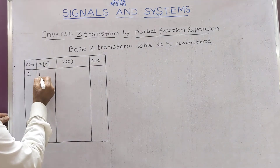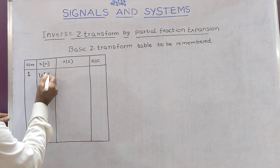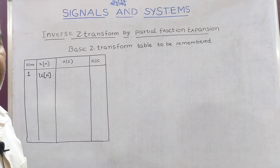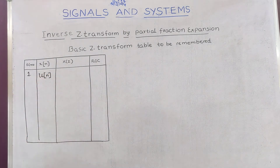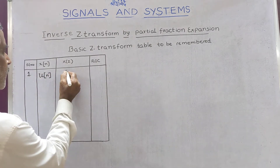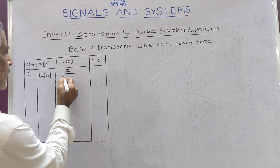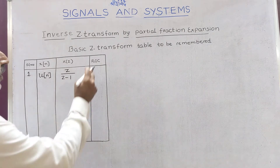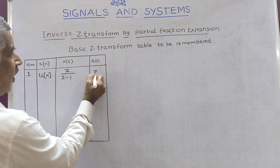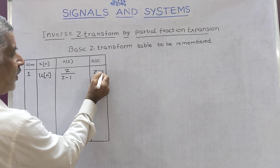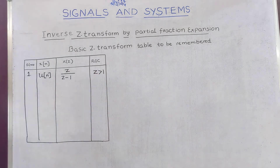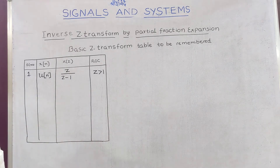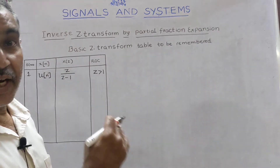Number one: for the step sequence u[n], the Z transform is given by Z over Z minus 1, and you have to remember the ROC for this — ROC is |Z| greater than 1. This is a right-sided sequence.